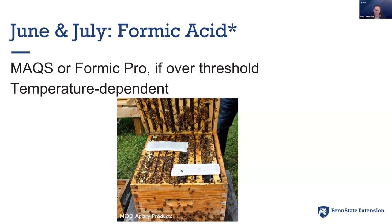The problem with formic acid is that it is highly temperature dependent. If it's too cold, it won't work; if it's too hot, you risk your queen and your brood. You have to carefully read the label and consider the forecasted temperatures, especially for the first three days the pads are in there — it cannot be over 85 degrees, and really if it's not over 80, that's even better if you can find a window in June and July. Both oxalic acid and formic acid can be used with the honey supers on, which goes to show how natural these chemicals are — they're not a concern for contaminating your honey or products.